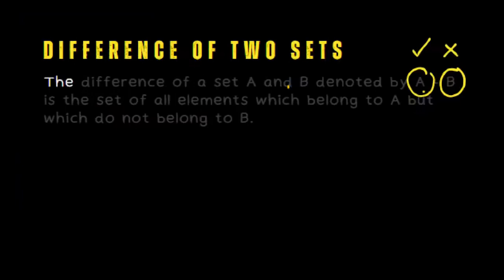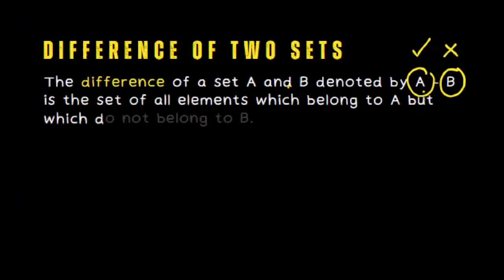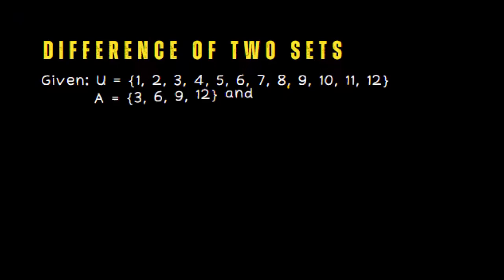Let's try to find out the next part: the difference of two sets. The difference of set A and B, denoted by this symbol with a check and X, is the set of all elements which belong to A but do not belong to B. The notation is A minus B.